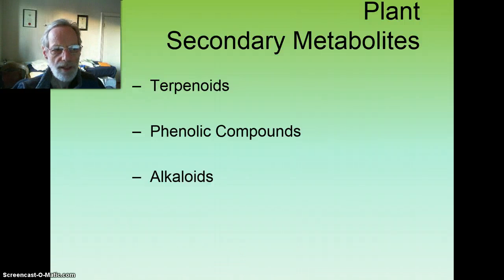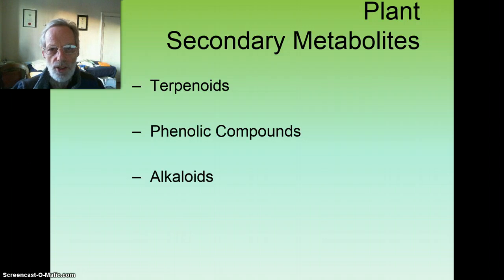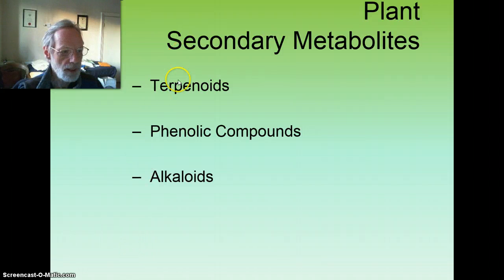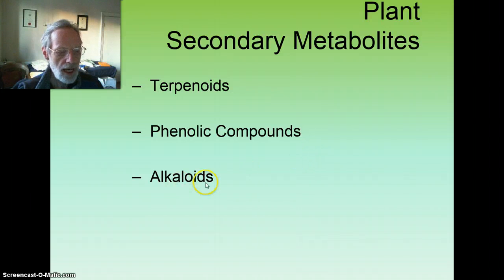Now I'm going to talk about plant secondary metabolites. What herbalist is not interested in plant secondary metabolites? These are the metabolites which do not play essential and obvious metabolic roles but are turning out to be vital in coordinating plants' interactions with their environments — hence the idea that stressed plants are better able to help stressed humans. Today we'll talk about three principal categories of secondary metabolite: the terpenoids, phenolic compounds, and alkaloids.